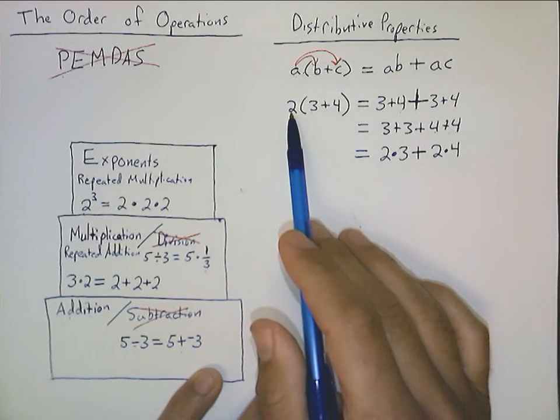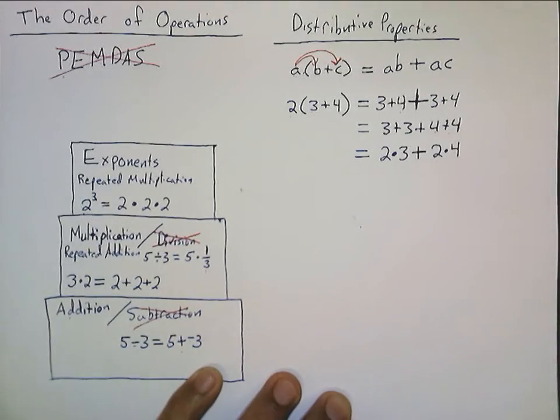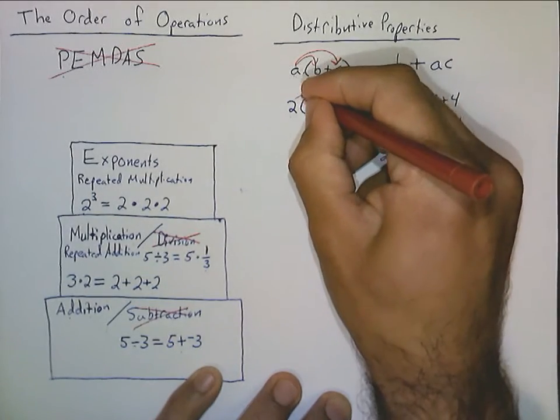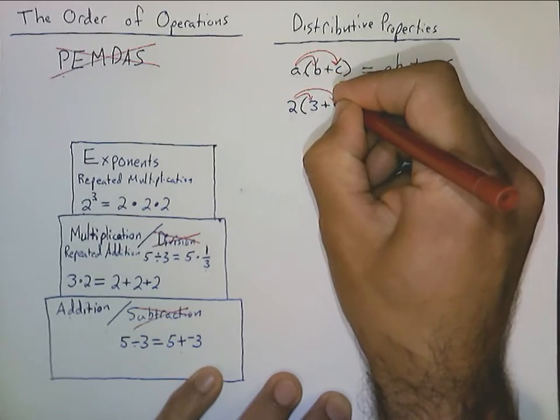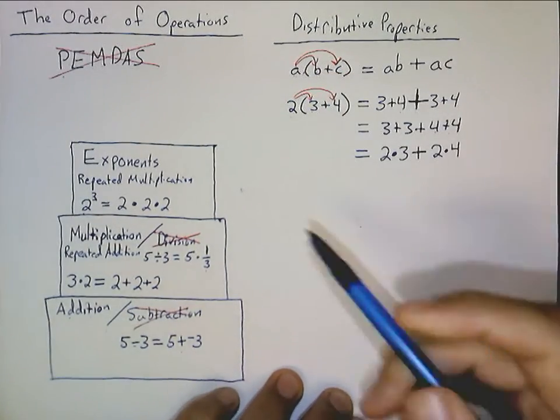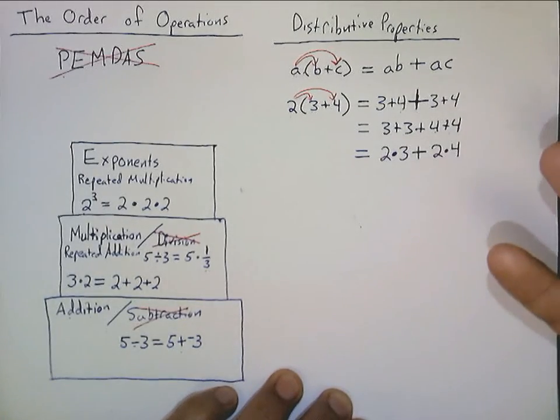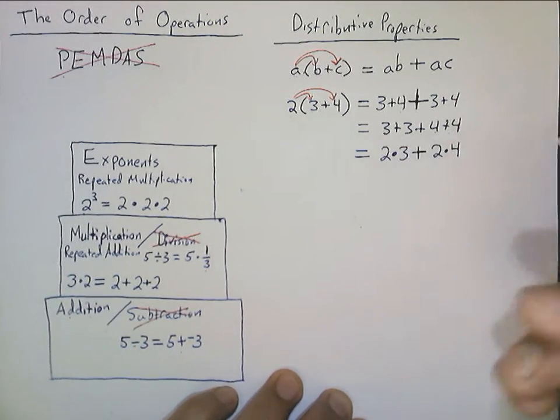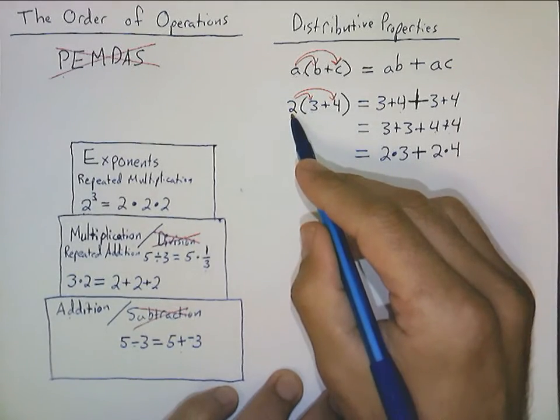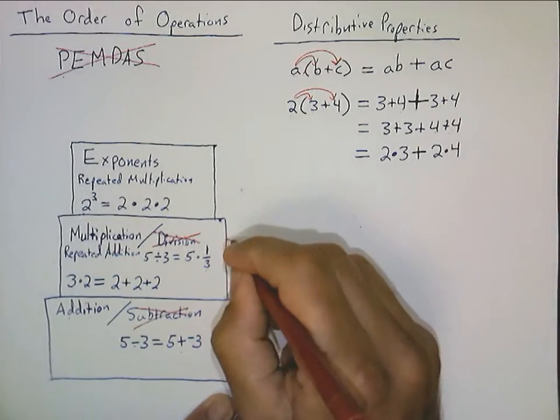So, that's why the two times the quantity three plus four is actually equal to two times three plus two times four. This two, or the multiplying by two, got distributed to both the three and the four. And, whenever you're applying a distributive property, I like to draw in these little arrows just to help show that to whoever is reading it that that's what I applied there. Even if I'm just showing it to myself within my work. So, that's the big idea here is that multiplication distributes over addition.